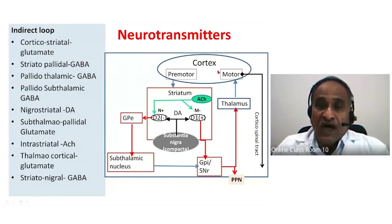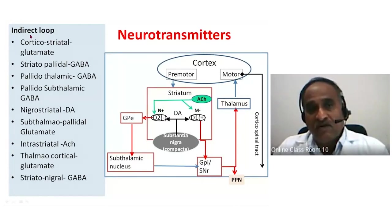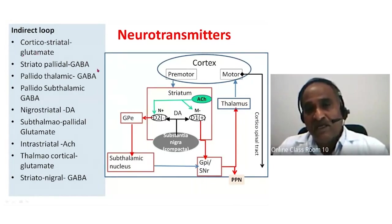There are four neurotransmitters in the basal ganglia circuits. The first is glutamate.